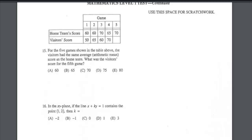It means the arithmetic mean score as the home team. So what was the visitor score for the fifth game? Here we can find the home team score. You can find the arithmetic mean by adding the sum of those values: 70 plus 65 plus 70 plus 60 plus 60, all divided by 5. The result is going to be 65.